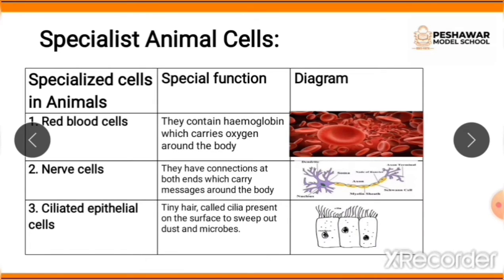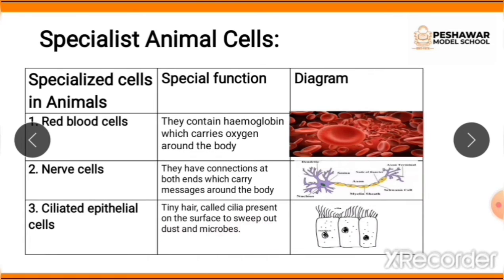These tiny hairs are present inside your throat and in your nose. In the nose they are known as nose hair or cilia, and in the throat tiny hairs known as cilia are also present. The function of cilia is to sweep out dust and microbes. These tiny hair-like structures visible in the diagram are known as cilia.